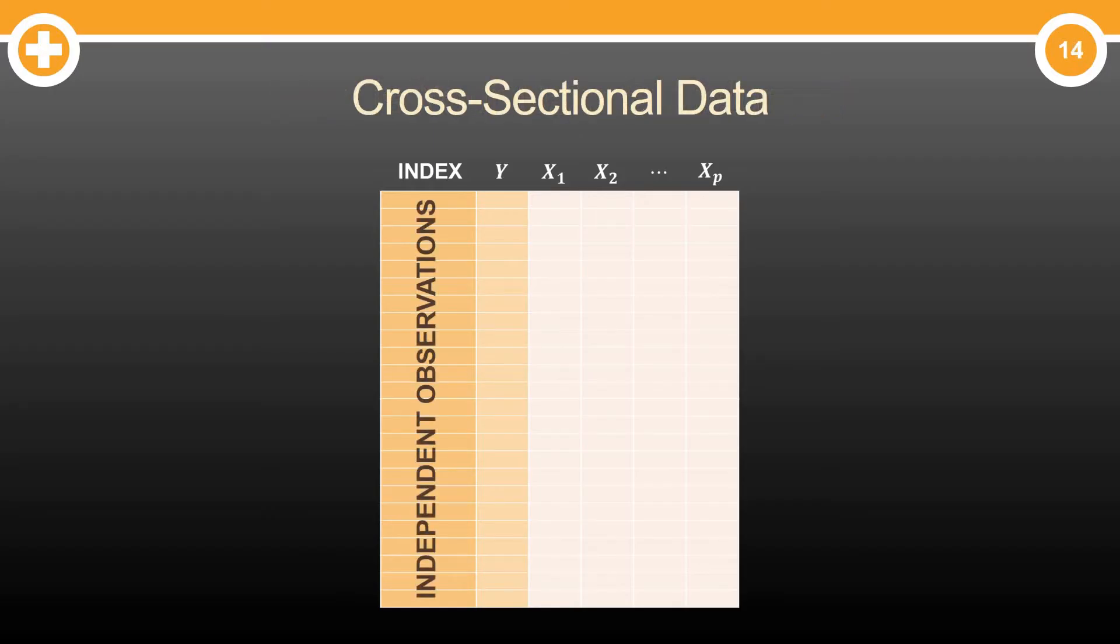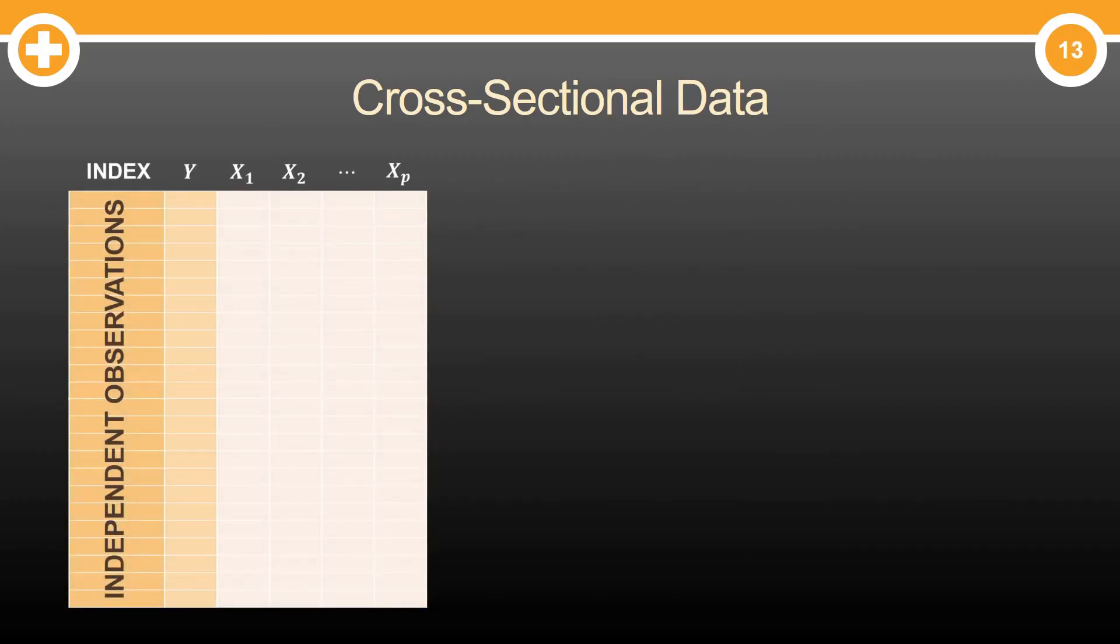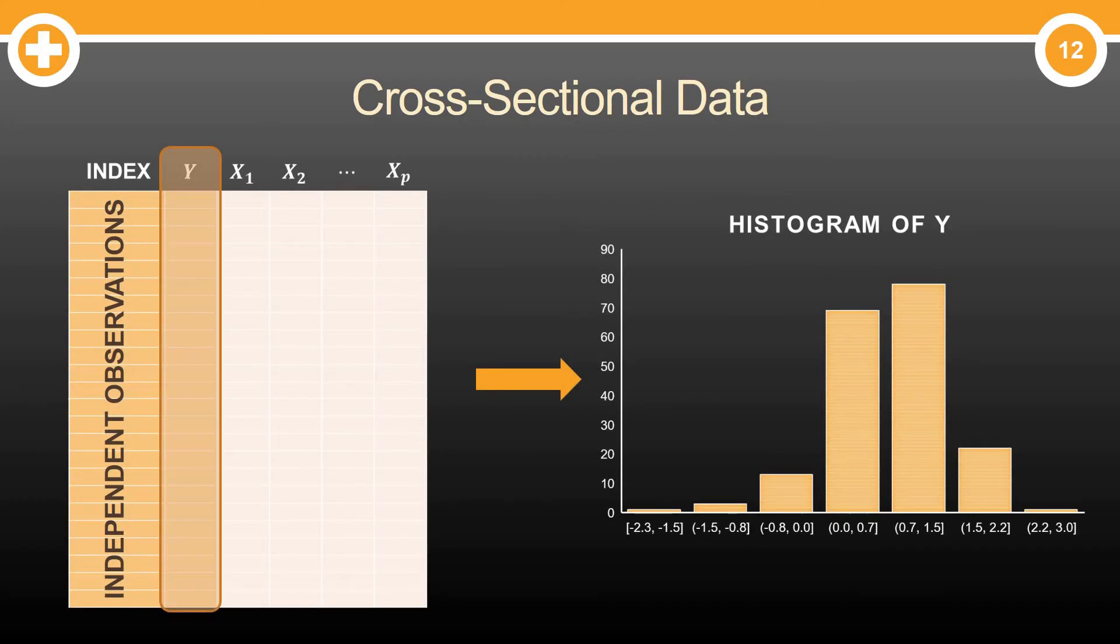In cross-sectional data, this indexing variable is an independent collection of observations. So whether they're independent customers, or independent stores, or independent cities, you're usually looking at values that each row is independent of itself. And with that being the case, how we observe cross-sectional data and really explore cross-sectional data is based on that assumption that time doesn't matter.